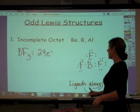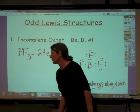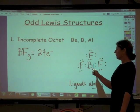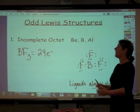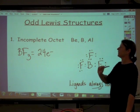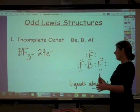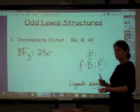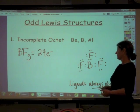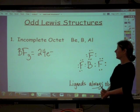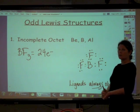And so we might look at this thing and think, well, wait a minute, here's boron with two, four, six. But we have to keep in mind that beryllium, boron, and aluminum can be stable with an incomplete octet. So this would be our Lewis diagram for boron trifluoride.